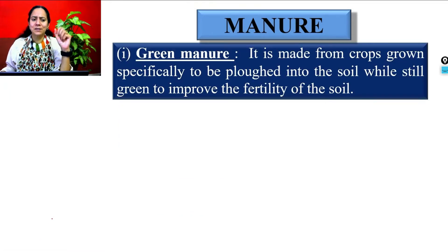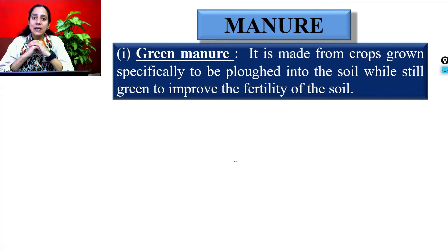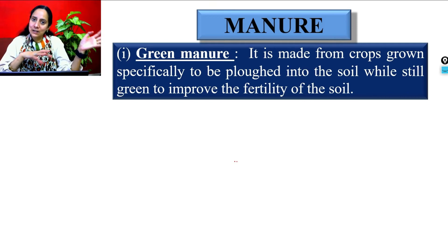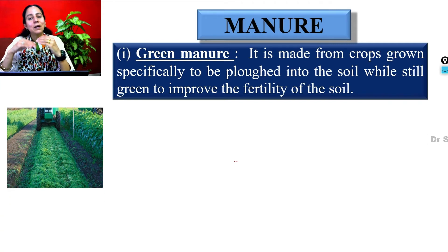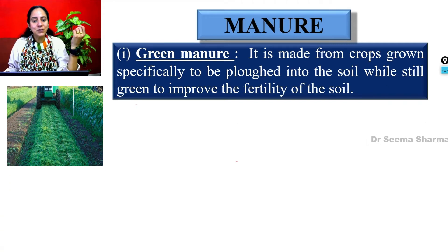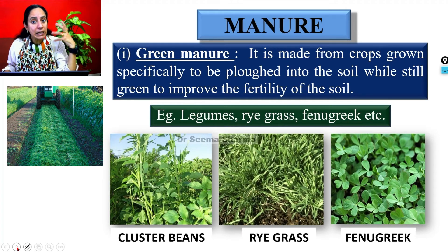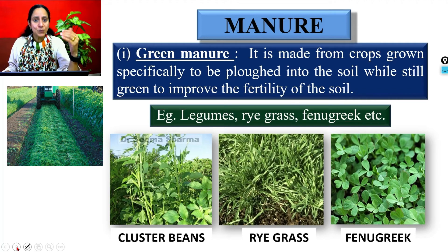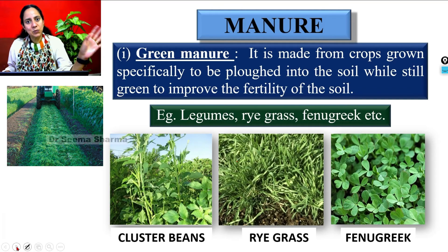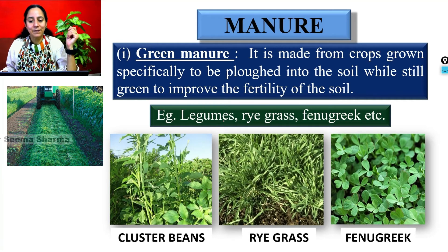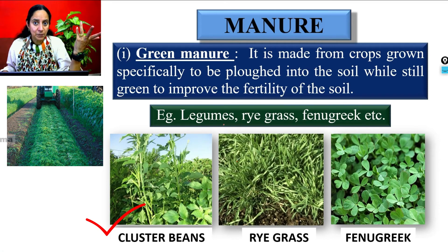Green manure is interesting. Although we usually think of manure as dead decomposed organic matter, green manure uses a living plant planted in the soil which then naturally decomposes. Green manure is made from crops grown specifically to be plowed into the soil while still green to improve fertility. The farmer raises these specific crops before sowing his main crop, and while plowing the field, those plants get buried. Examples include legumes, ryegrass, and fenugreek. These crops are called green manure crops and their decomposition increases the soil nitrogen content.